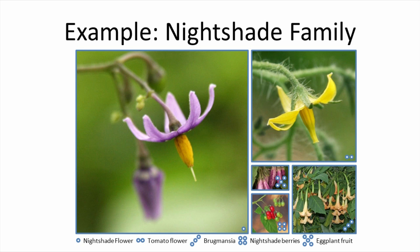Many species in the nightshade family are toxic. Flowers have four to five sepals, usually fused together. The leaves are alternating along the stem, and the fruit is usually a berry, sometimes a capsule. Members of this family include the weed nightshade, the ornamental brugmansia, and our favorite garden crops such as tomatoes, eggplants, peppers, and potatoes.